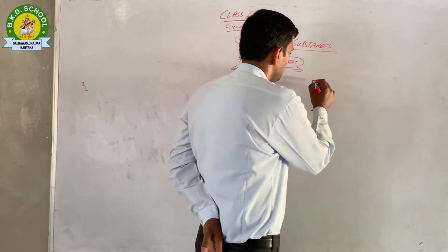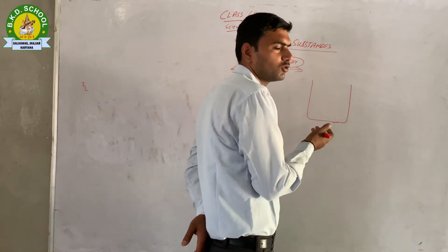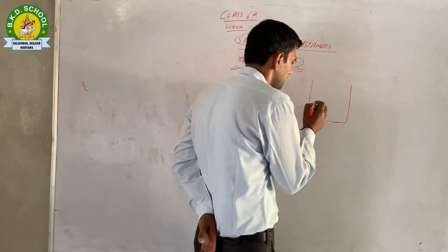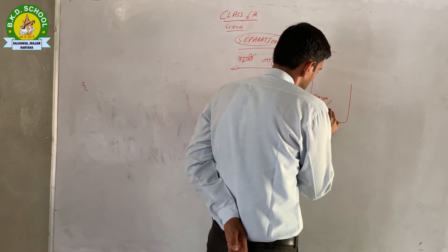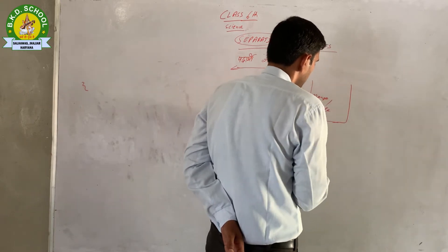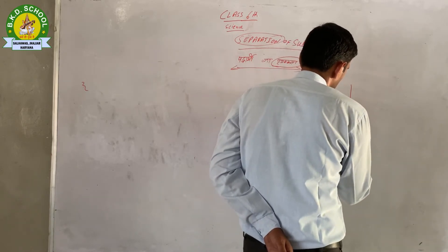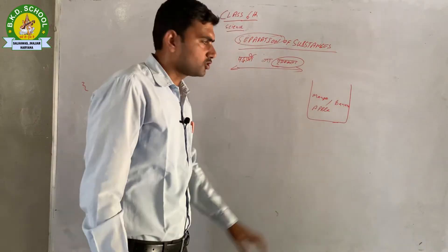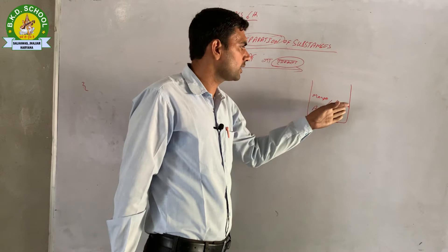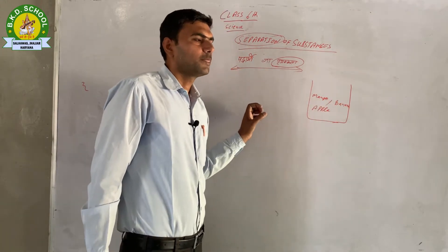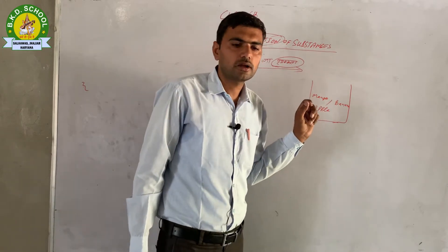जैसे मान लें एक बर्तन है जिसमें हमने आम, केले, सेव (apple), और बनाना डाल दिये — तो इसके अंदर ये तीनों mix हैं। Aam, apple, banana सब mix हैं।